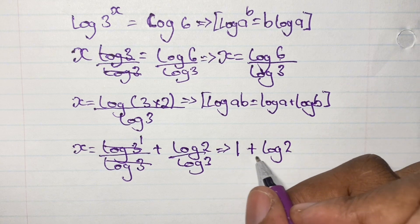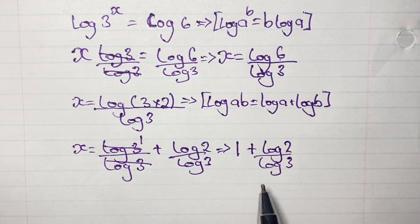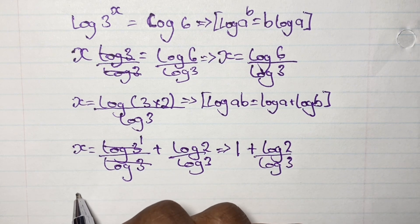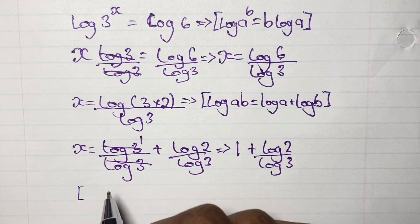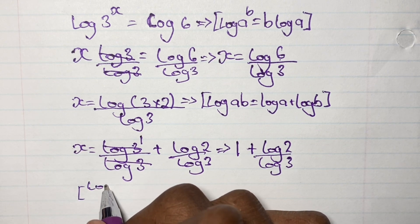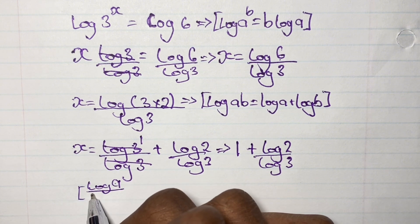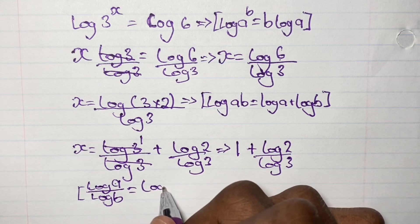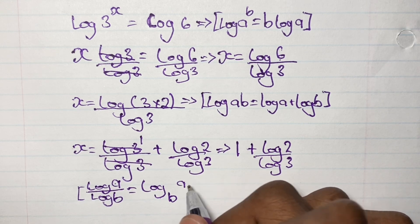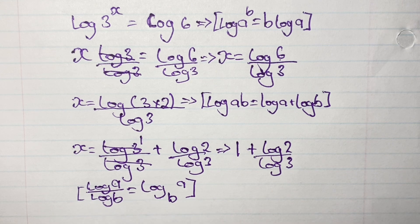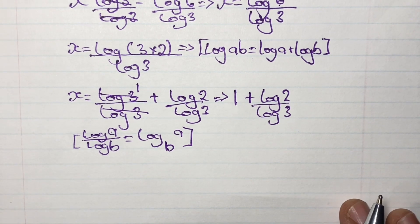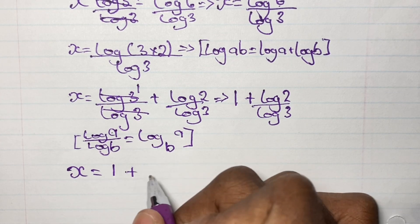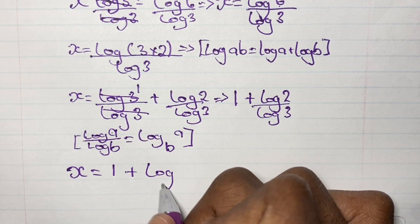We can simplify this a bit further by using our logarithm rule: log a over log b is the same as log base b of a. Applying this rule to log 2 over log 3, we get log base 3 of 2. So my final value of x is x is equal to 1 plus log base 3 of 2.